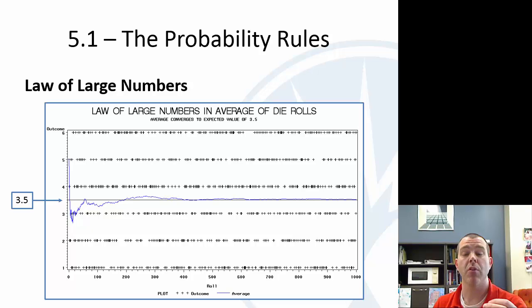it could be any one, two, three, four, five, or six. And if I average over time, in the long run, I should expect what the theoretical probability is. So you can see here, maybe the first one was a five.